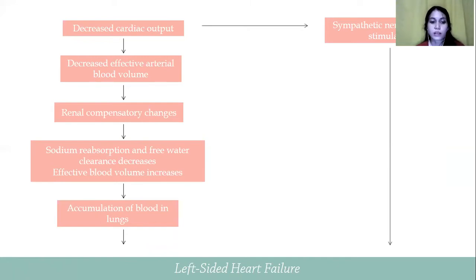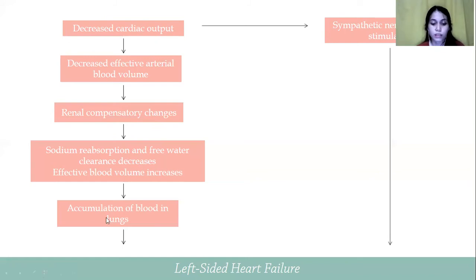This also causes vasoconstrictive constriction. Renal compensatory changes occur, which cause a decrease in renal and cortical blood flow. Sodium absorption follows, and a decrease in free water clearance occurs. Effective blood volume then increases, which results in accumulation of blood in the lungs.